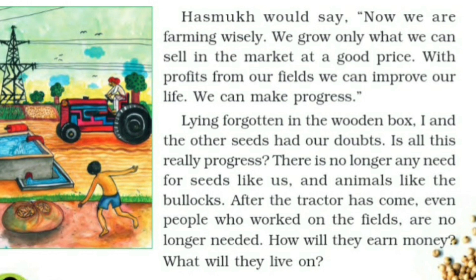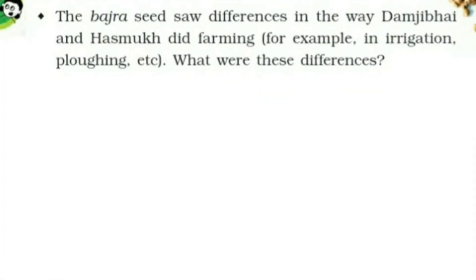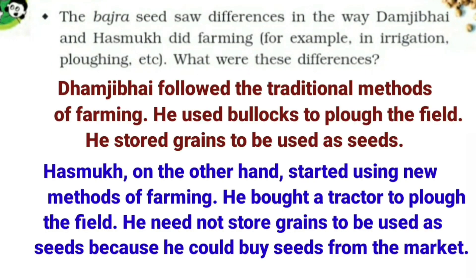'There is no longer any need for seeds like us and animals like the bullocks. After the tractor came, even people who worked on the fields are no longer needed. How will they earn money? What will they live on?' The bajra seed saw differences in the way Damji Bai and his son Hasmuk did farming. Damji Bai followed traditional methods — he used bullocks to plough and stored grains as seeds. Hasmuk used a tractor and bought seeds from the market.